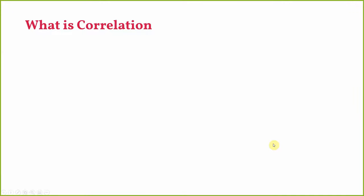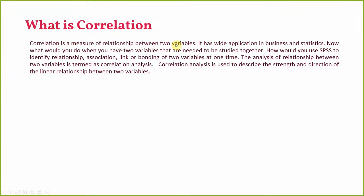What is correlation analysis? Correlation is a measure of relationship between two variables. It has wide application in business and statistics. When you have two variables that need to be studied together, you use SPSS to identify the relationship, association, link, or bonding between those two variables. The analysis of relationship between two variables is termed correlation analysis — used to assess whether the relationship is significant, and what is its strength and direction.